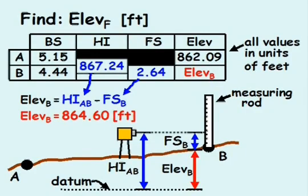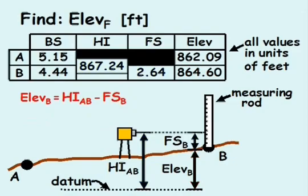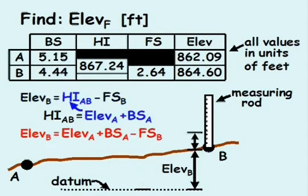Looking over our equations, the elevation at point B equals the height of the instrument minus the foresight reading. But previously, we already solved for the height of the instrument as the elevation at point A plus the backsight reading to point A. Substituting in the height of the instrument, we can equate the elevation of point B to the elevation at point A plus the backsight to point A minus the foresight to point B.